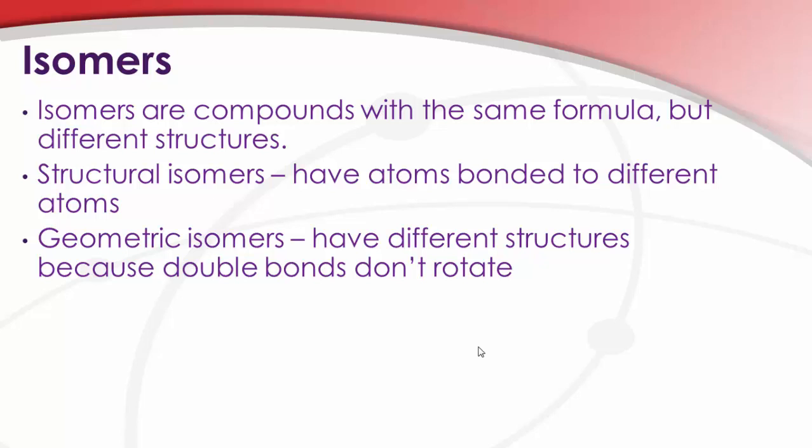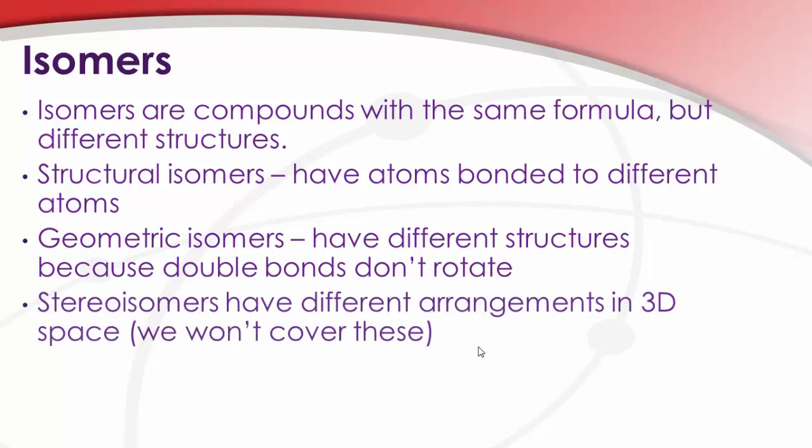Geometric isomers have the exact same structure except that the double bond is effectively rotated between two different geometric isomers, and the net result is a different compound. The reason for this is double bonds aren't capable of rotating under normal conditions. Stereo isomers are based on different arrangements in three-dimensional space. We won't talk about these. We'll save those for a more advanced organic class that you might take later on.